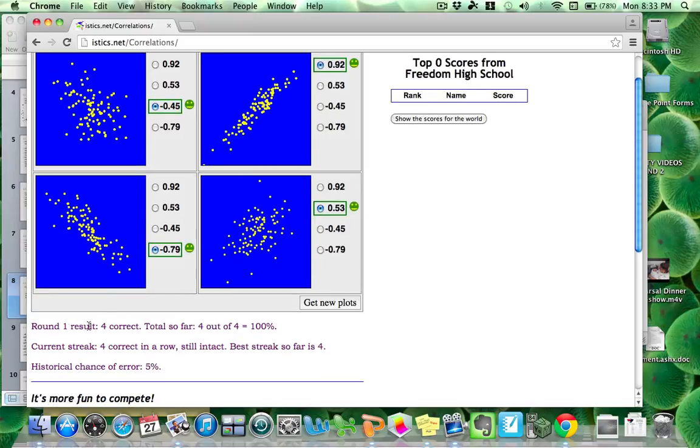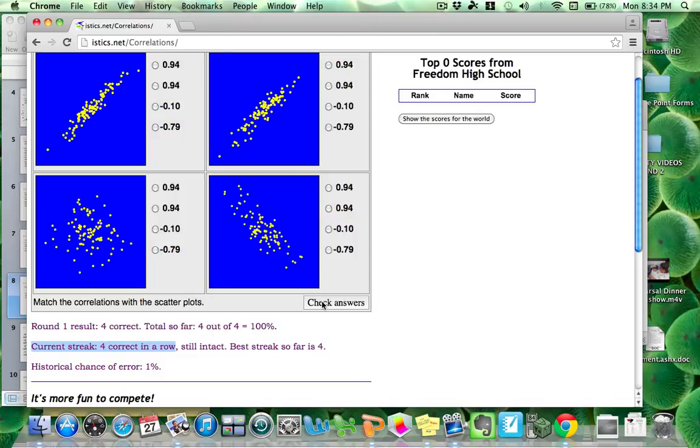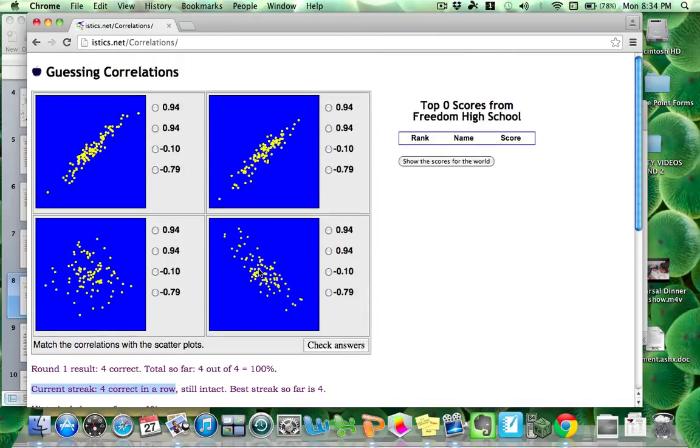And so here's what it says. Round one result, four correct. So far, four out of four equals 100%. Current streak, that's what matters. Current streak, four correct in a row. That's what I meant when I said you have to get a streak of 100. I need you to get 100 of these in a row correct. So I'm going to hit get new plots. I'll do one more of these together with you.